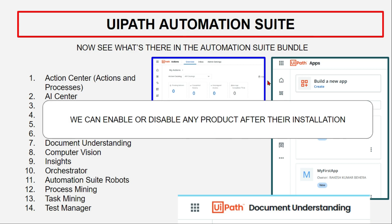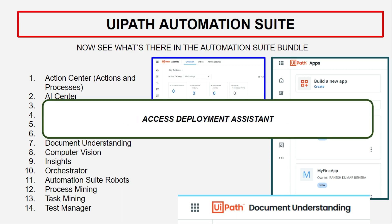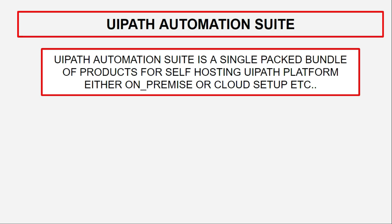If you're not sure how to proceed with installation, I'm also going to show you how to access the Deployment Assistant and take help from it. What we've understood so far is that UiPath Automation Suite is a single packed bundle of various products — not all products, as some are cloud-specific — but it's designed for self-hosting the UiPath platform either on-premise, private cloud, or any other location.